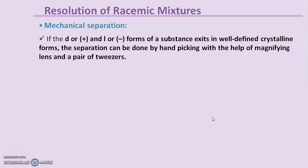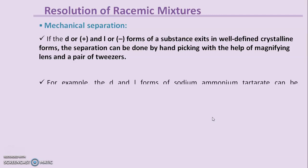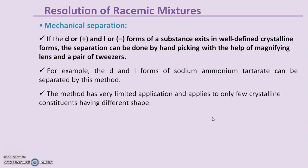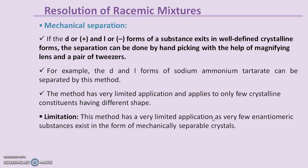First is mechanical separation. If the D and L forms of a substance exist in well-defined crystalline forms, the separation can be done by hand-picking with the help of a magnifying lens and a pair of tweezers. For example, D and L forms of sodium ammonium tartarate can be separated by this method. This method has very limited application and applies to only a few crystalline substances having different shapes. It is also very laborious and time consuming.